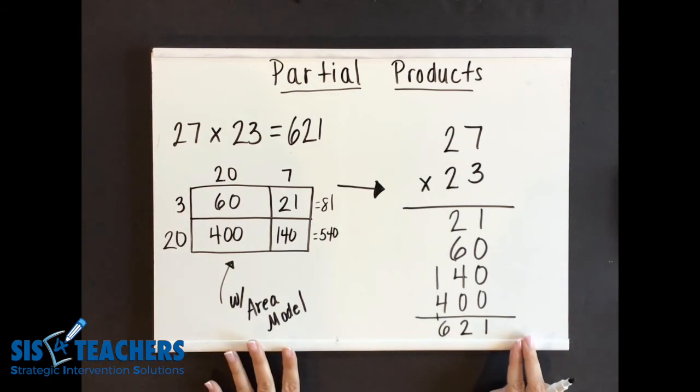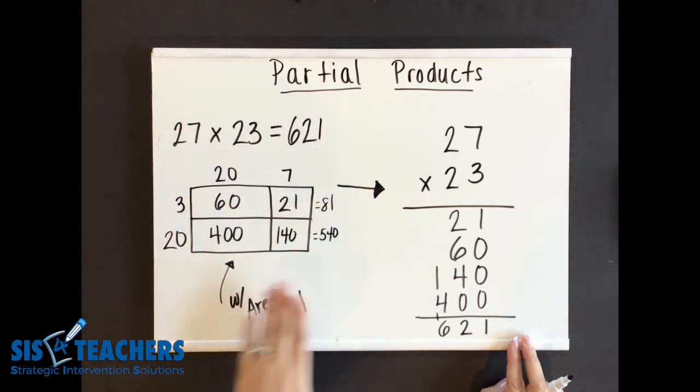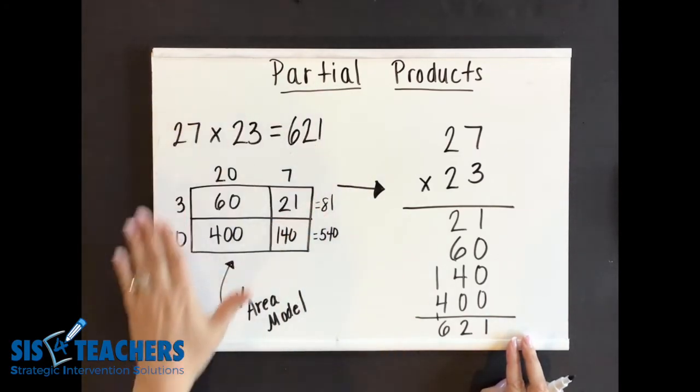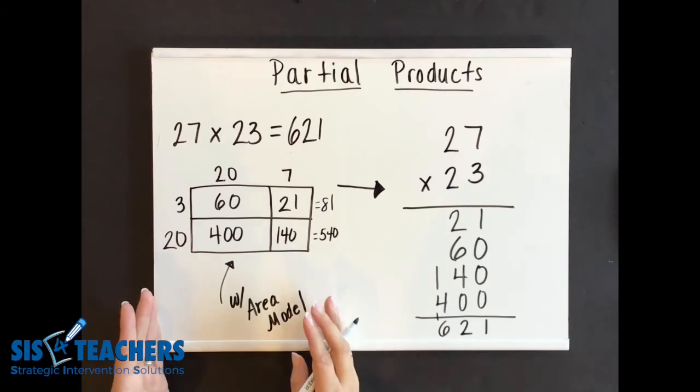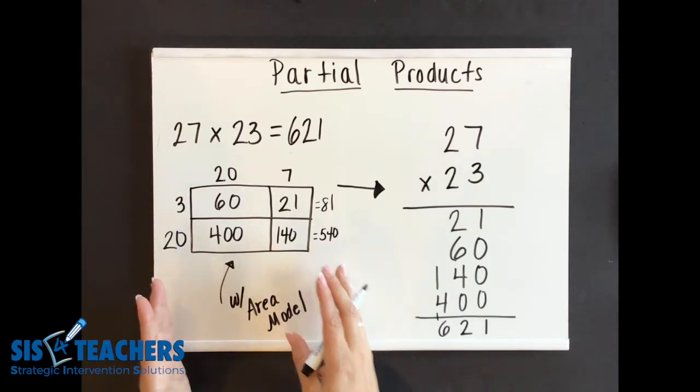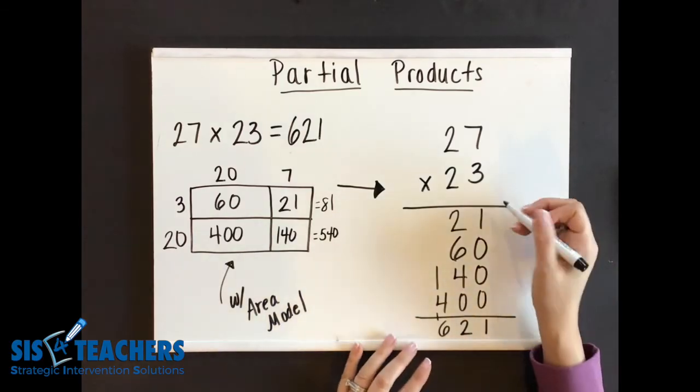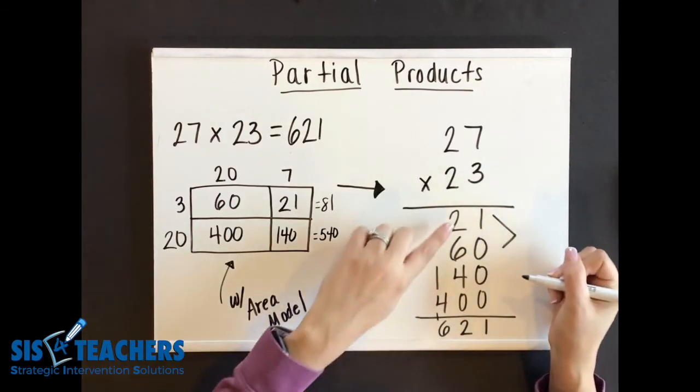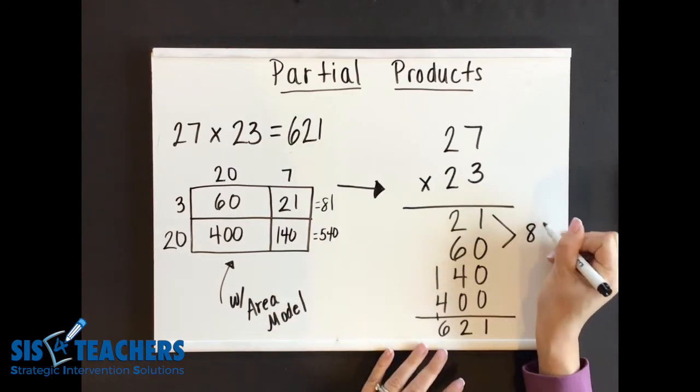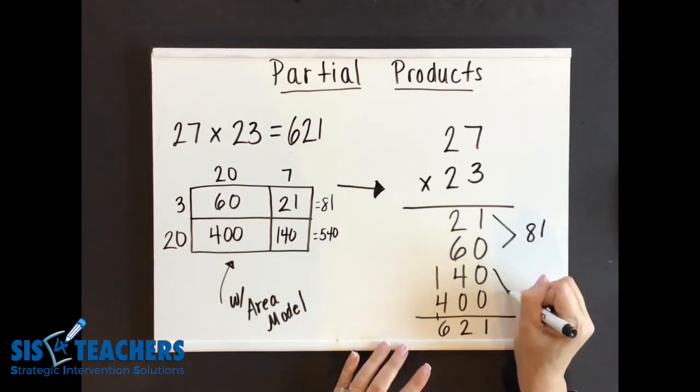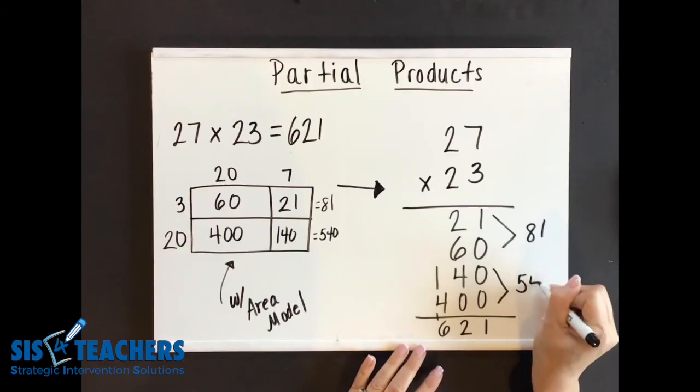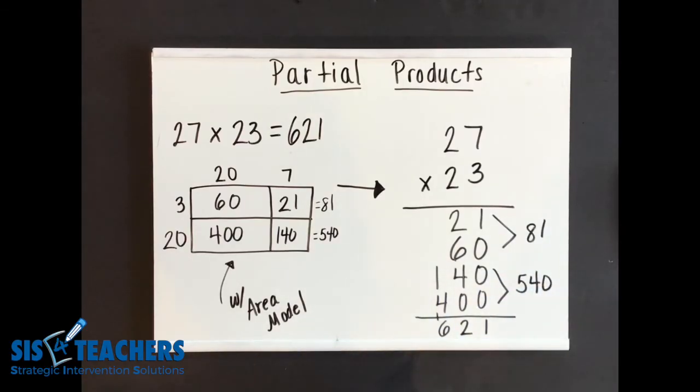Are you making the connection? Do you see how the area model is a really great step for us to start to learn the multiplication? But as we start to move this, we want to move children into the idea of understanding it with partial products. You can even see that if I added these totals here, I'm still getting exactly what I was doing in partial products to help me make sense of that, right?